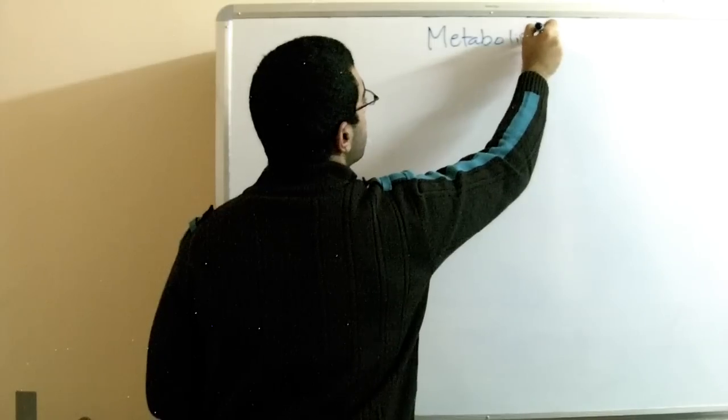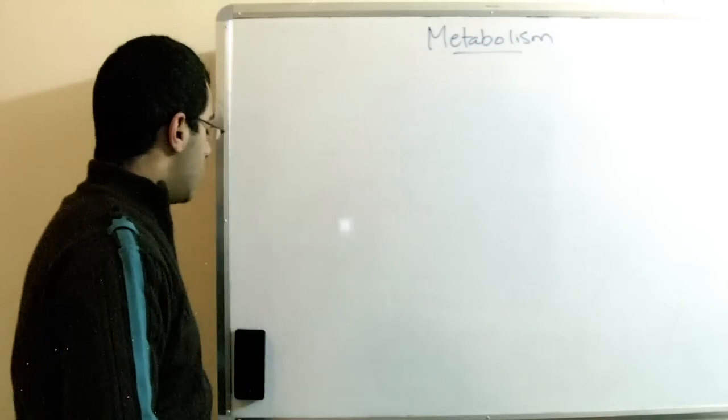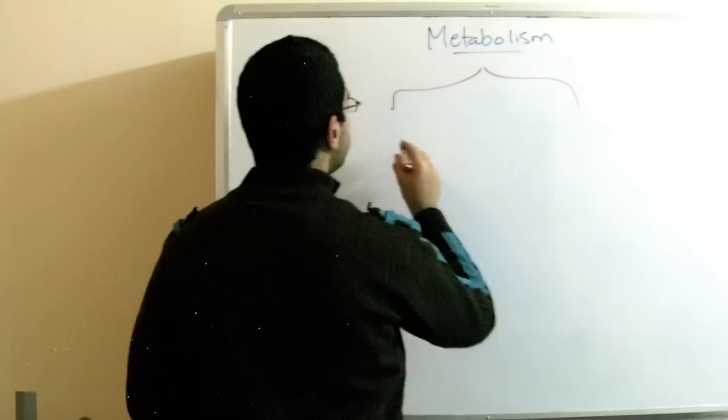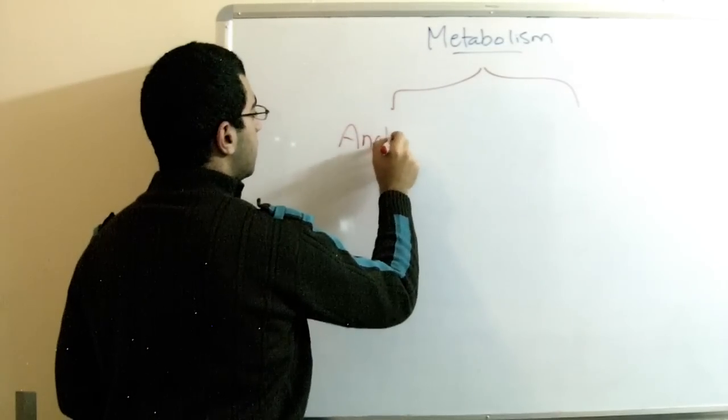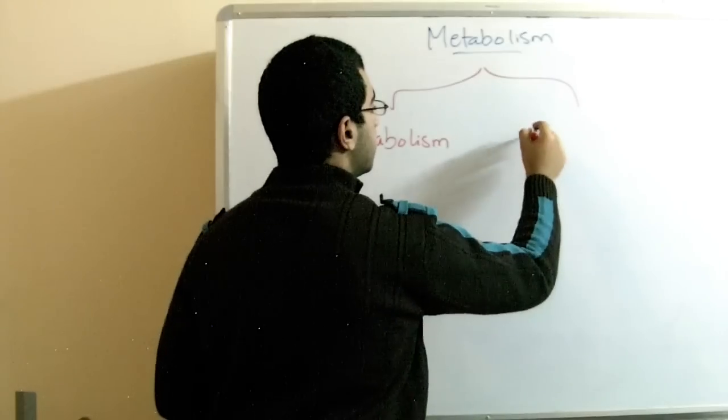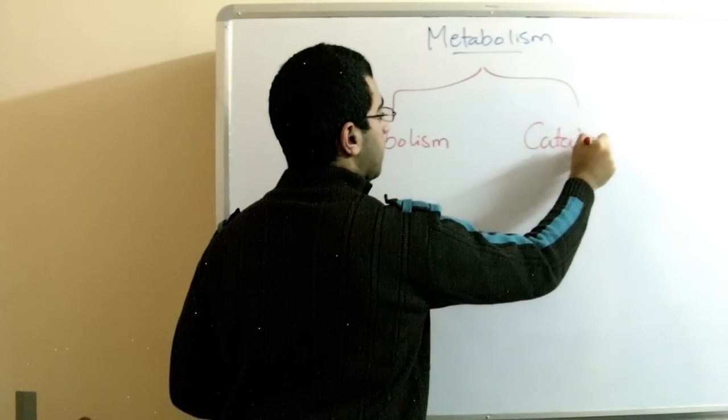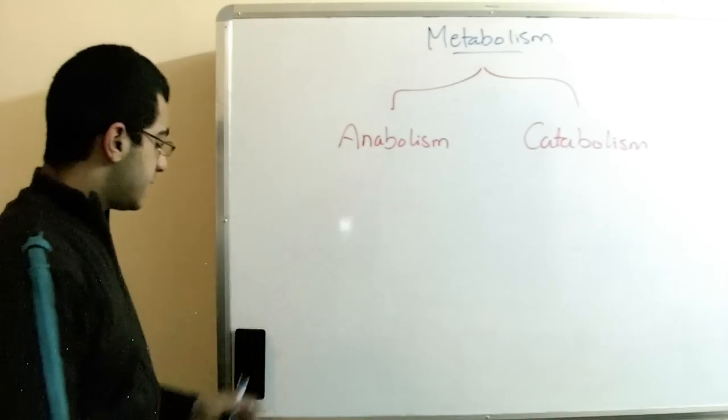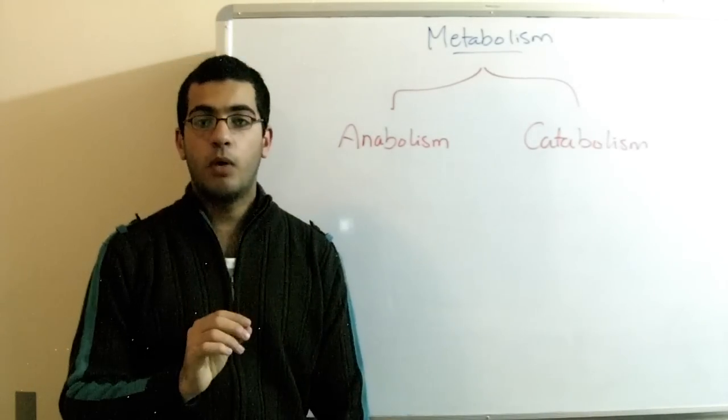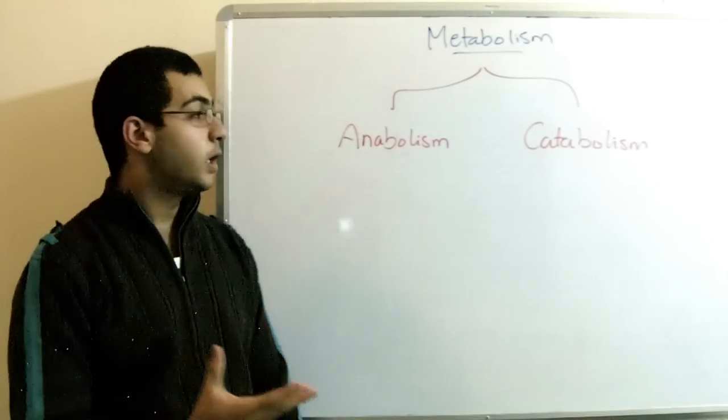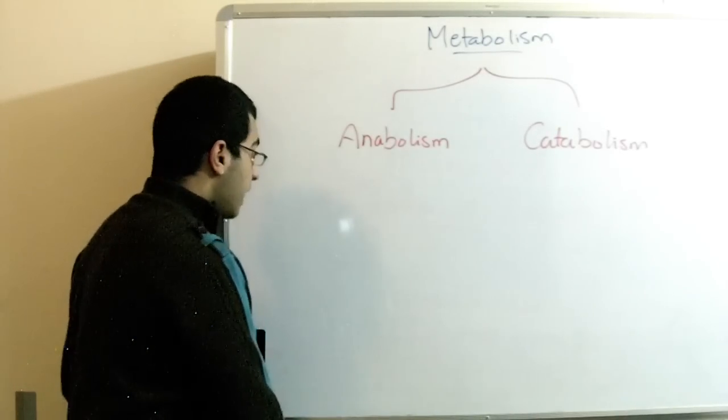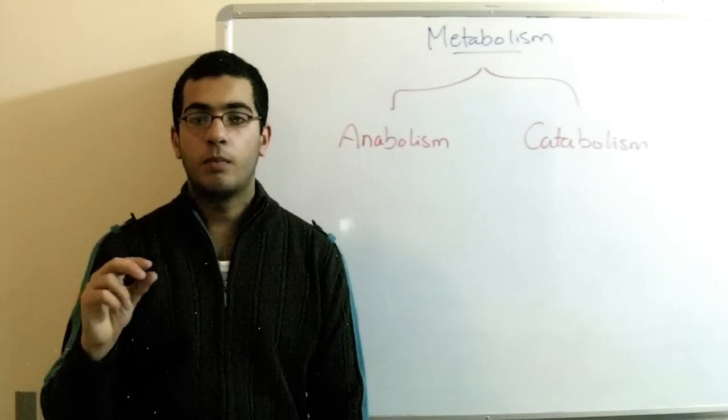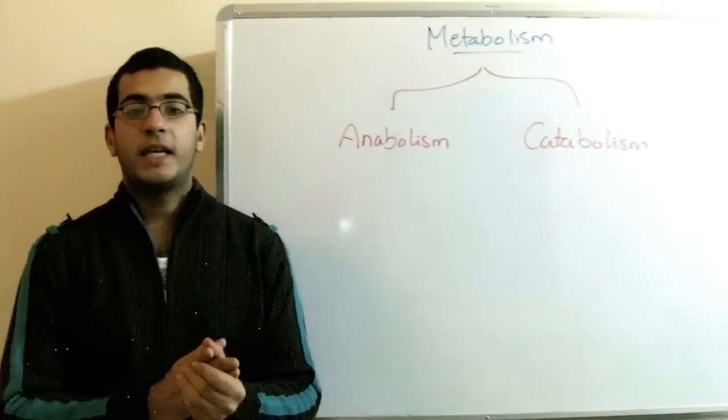Metabolism. How to make use of the absorbed food. The metabolism actually divides into two types: anabolism and catabolism. Anabolism is the combination of the small monomers to form polymers. It may be the opposite of digestion. Anabolism is the collecting of small monomers to make bigger polymers to make use of them. For example: